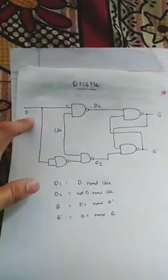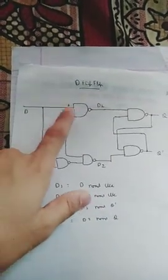What we do first is pass it through a NAND gate. On one port of the NAND gate we give D, on another port we give clock, and then the output that we get is the signal D1.